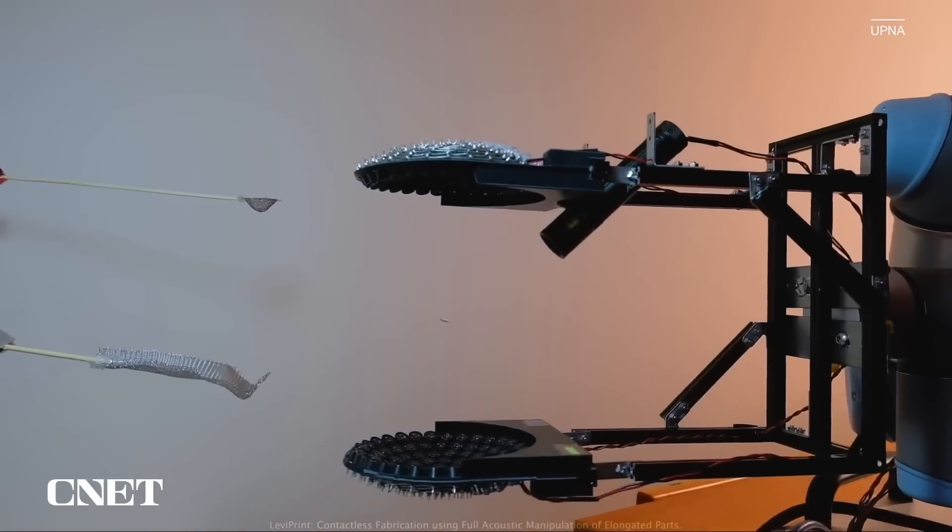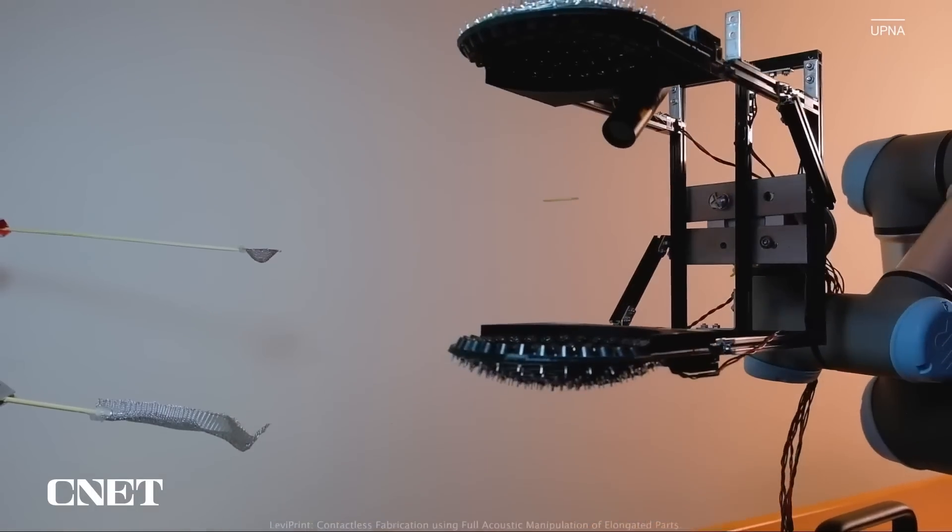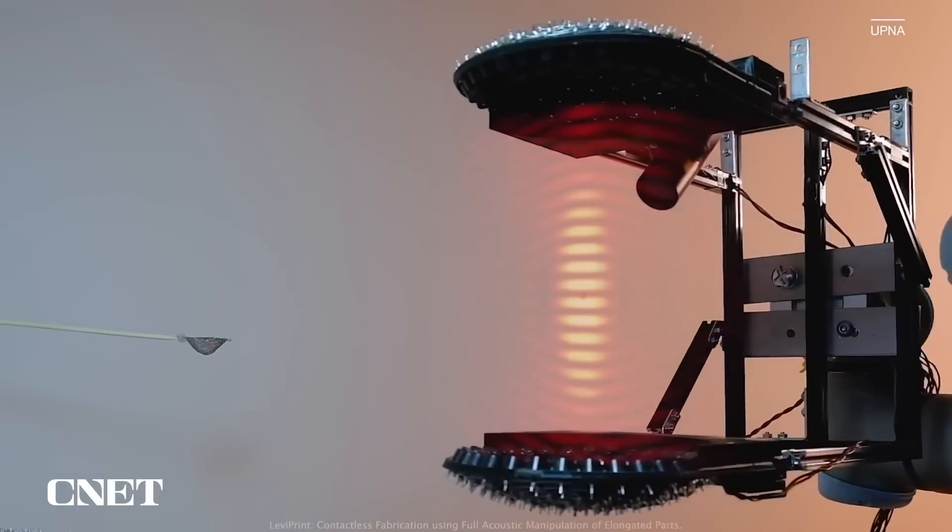In LevyPrint's video, you can see the interference patterns created by the sound waves. Dark areas represent low amplitude or low volume, while brighter areas indicate high intensity. You can see that the particles tend to go to the low amplitude areas.